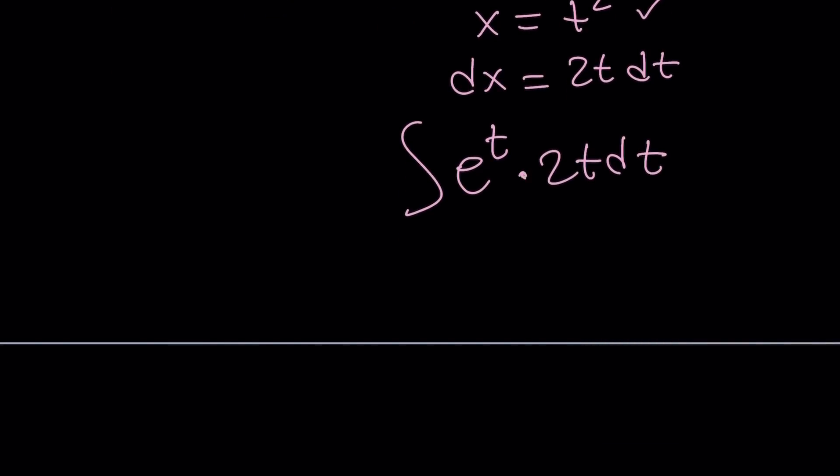So we can go ahead and take the 2 out. And then this is going to give us t e to the t dt. It's usually better to write the t first. No big deal. But since we're going to use the DI method here, it's going to be a little better to keep it on the left.